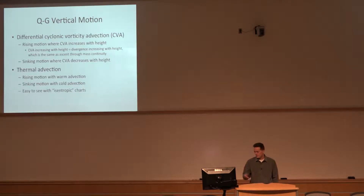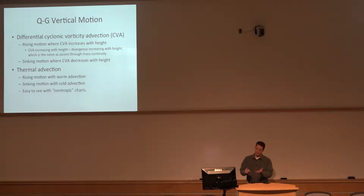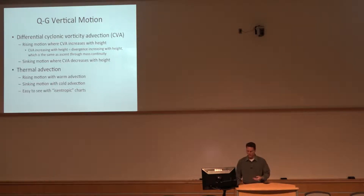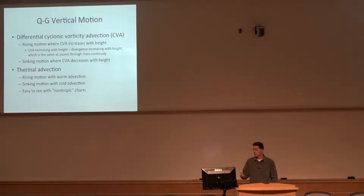To summarize vertical motion: you're looking for differential CVA and thermal advection for omega, and for height change you're looking for CVA and differential thermal advection — you just flip it around. That's the part you're going to use day-to-day when trying to make a forecast or judge the quality of a numerical model forecast.